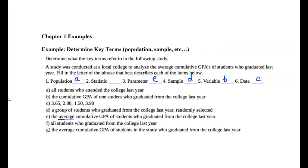Part F: all students who graduated from college last year. Here's an interesting distinction: A is all students who attended college last year, while F is all students who graduated. We're interested in the GPA of students who graduated, so F is the actual population — not A. You can see the sample in Part D also refers to students who graduated, not who attended. So A was just there to make us think carefully. The group of interest is students who graduated.